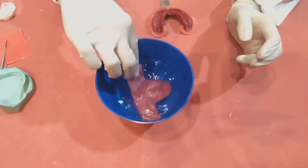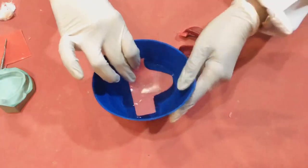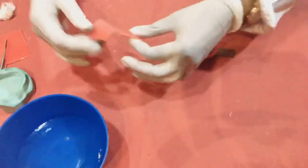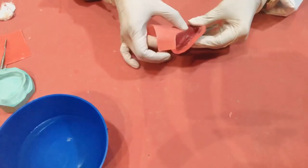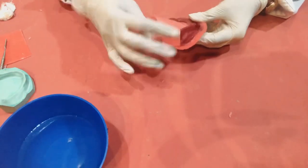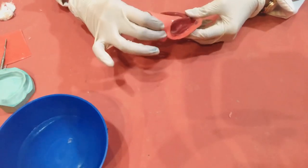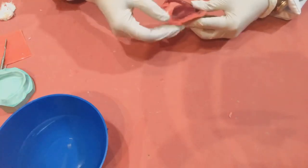I find it easier to contour and adapt when I soften this wax sheet in warm water. Adapt it to the lingual borders of the impression. Again the same rule, keep it two to three millimeters below the borders of the impression.